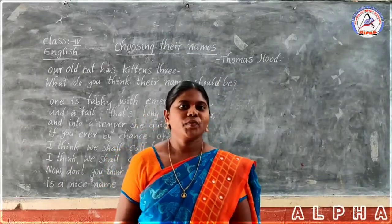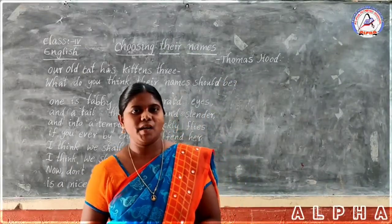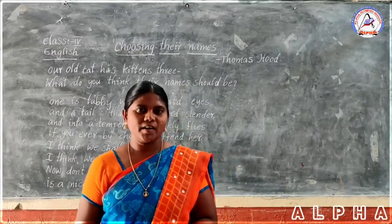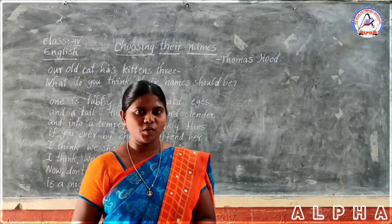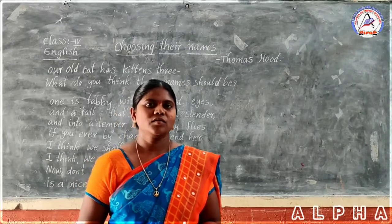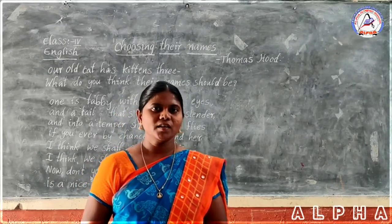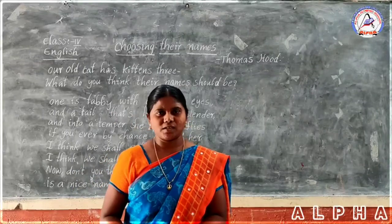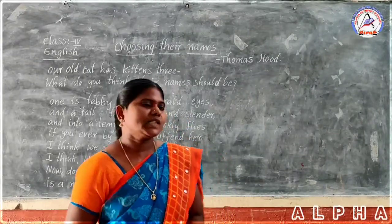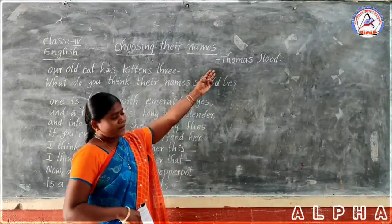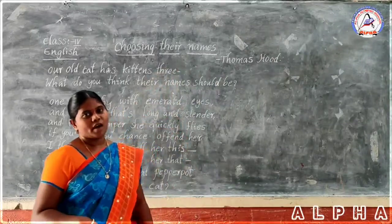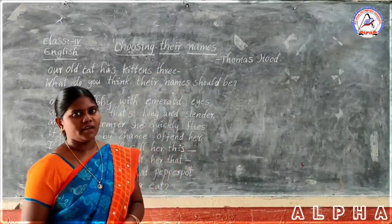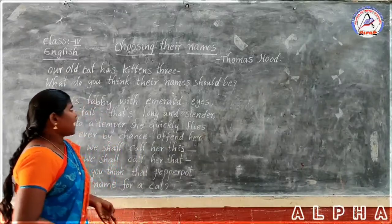Okay children, you all have names. Our parents choose a suitable name for us and we are called by that particular name. In this poem, the poet Thomas Hood wants to select names for cats.